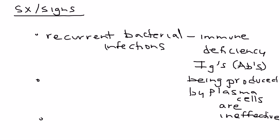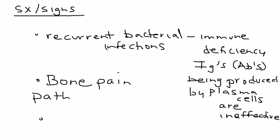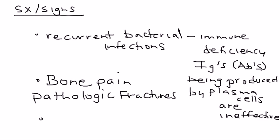The next part of the symptomatology involves bone pain, and that is simply because of fractures. All those fractures are occurring because the malignant plasma cells are activating those osteoclasts, and the osteoclasts are essentially resorbing the bone.